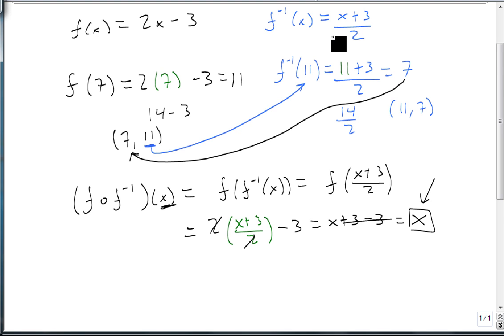To prove that two things are inverses of each other, we plug their general form in and make sure we get an x out.